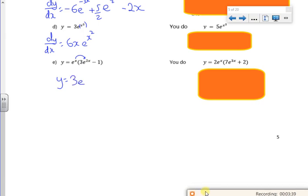So I've got 3e to the 3x minus e to the x. So then if I differentiate it, I've got 3 times 3e to the 3x, so 9e to the 3x minus e to the x. There's another one there done for you.